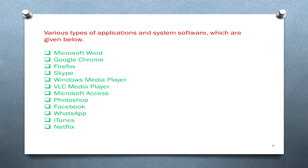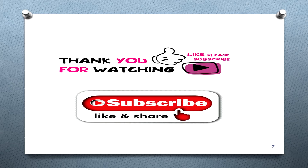Various types of application and system software include Microsoft Word, Google Chrome, Firefox, Skype, Windows Media Player, VLC Media Player, Microsoft Access, Photoshop, Facebook, WhatsApp, iTunes, and Netflix.